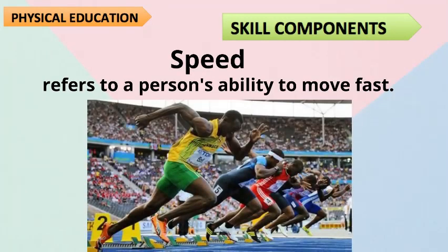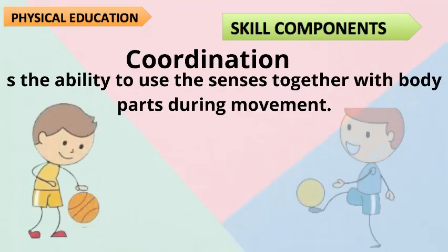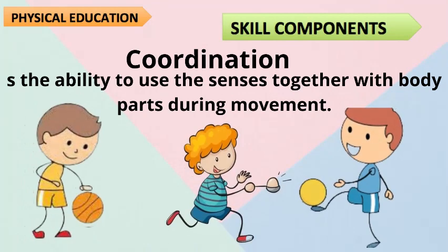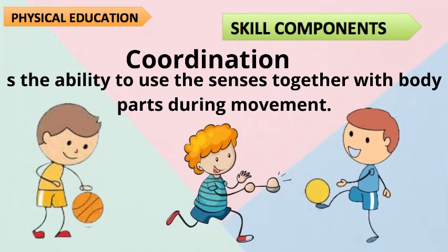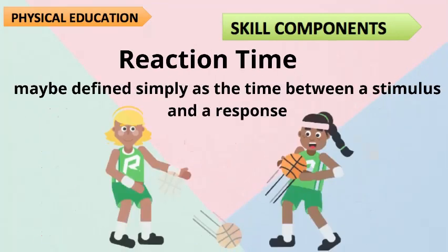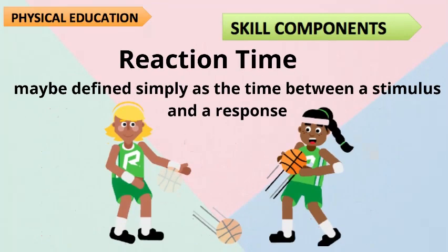Speed refers to a person's ability to move fast. Coordination is the ability to use the senses together with body parts during movement. Reaction Time may be defined simply as the time between a stimulus and a response.